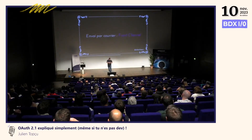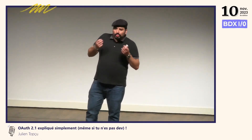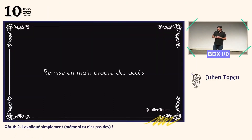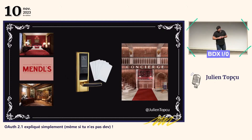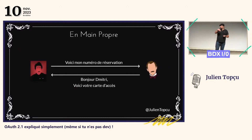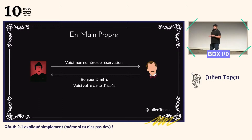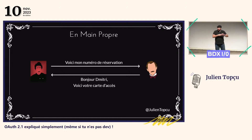On a dû encore une fois changer tout notre process. On s'est dit : les accès, c'est quelque chose de trop important, on va les remettre en main propre, pour être sûr qu'on les a donnés à Dimitri. Le process ressemble beaucoup à ce que vous connaissez quand vous allez chercher votre chambre d'hôtel. On va dégager cette serrure à code, on va mettre une serrure à badge avec des cartes. Maintenant, Dimitri, quand il veut accéder, il ne peut plus utiliser directement le code pour ouvrir la porte — il va devoir aller à la réception, avec son numéro de réservation. Si le numéro de réservation existe, Gustave lui donne une carte. Et c'est cette carte qui permet d'ouvrir la chambre d'hôtel. Cette remise en main propre, c'est ce qu'on appelle le back channel.